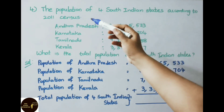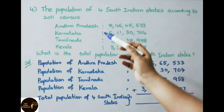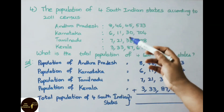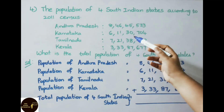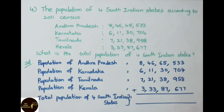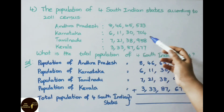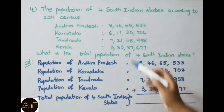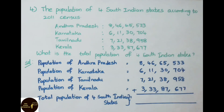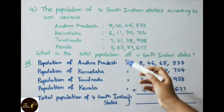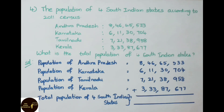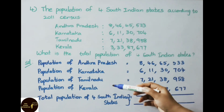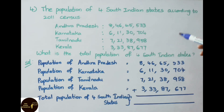Let us see the fourth sum. The population of 4 South Indian states according to the 2011 census: Andhra Pradesh — 8,46,65,533; Karnataka — 6,11,33,704; Tamil Nadu — 7,21,38,958; Kerala — 3,33,87,677. What is the total population of the 4 South Indian states? We have entered the values as given in the question.